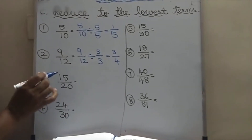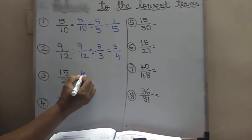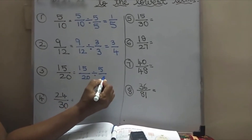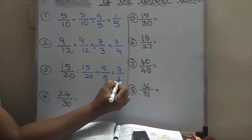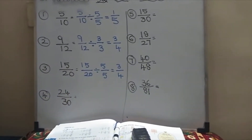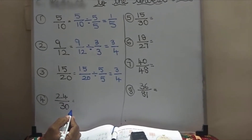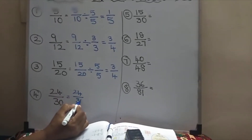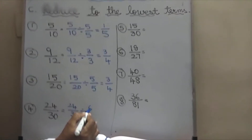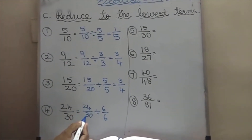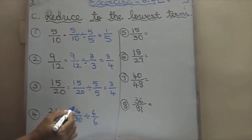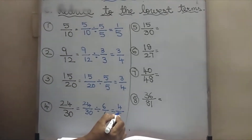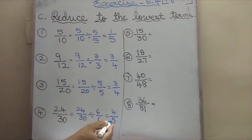Here, 15 by 20 — this goes in 5 table. 5 3s are 15 and 5 4s are 20. And then 24 by 30 — this both goes in 6 tables. 24 by 30 divided by 6. If it goes in 4 tables, 30 will not go in 4 tables. Both numbers which go in the same table, you have to write. So 6 tables — 6 4s are 24 and 6 5s are 30. So the answer is 4 by 5.